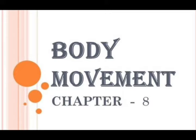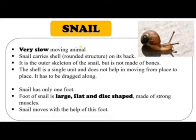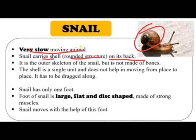Our next topic is the movement of snail. Snail is a very slow-moving animal. The snail carries a shell on its back, which is the outer skeleton of the snail, but it is not made up of bones.